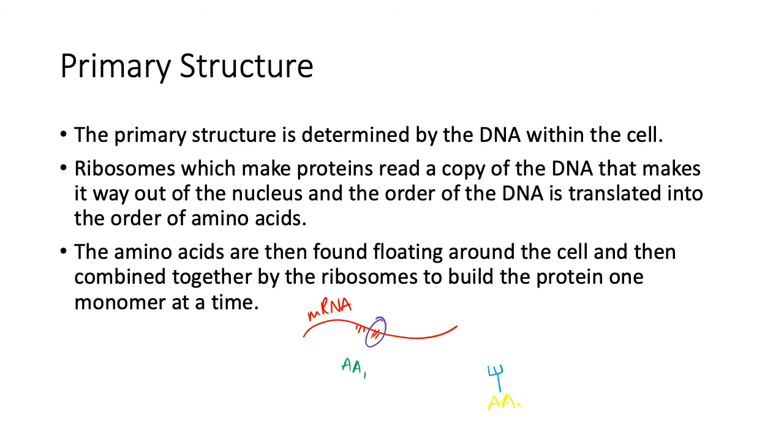That goes over to here. If it's the right one, then amino acid number two gets linked to amino acid number one, and so on and so forth. So the idea that these amino acids are floating around, they float to the ribosome, the ribosome decides whether it's the right one and then sticks it to the last monomer.